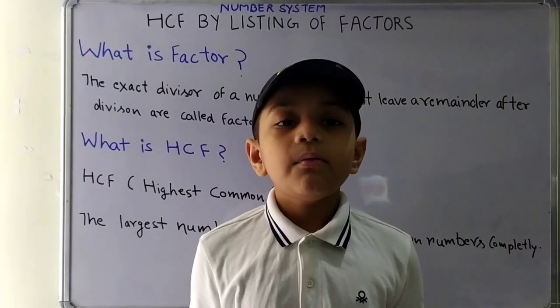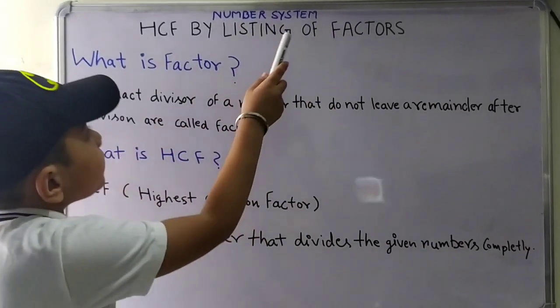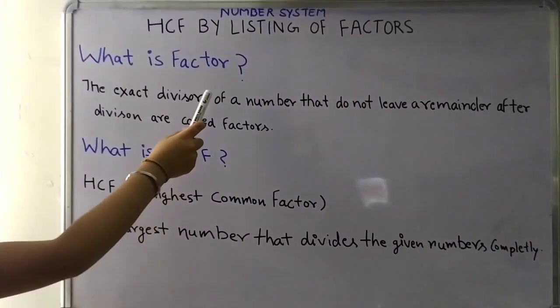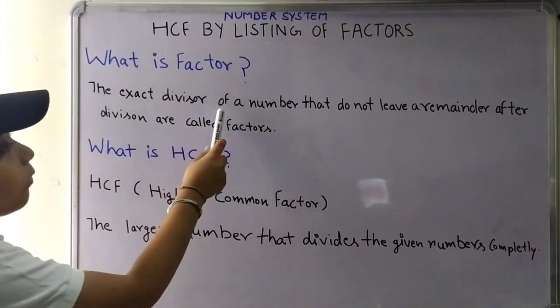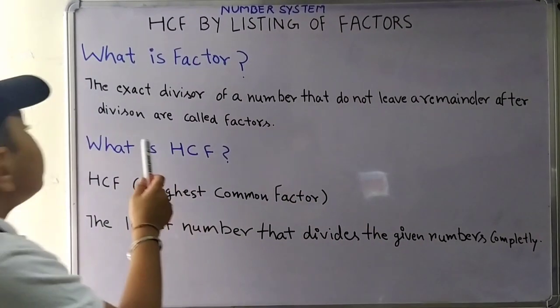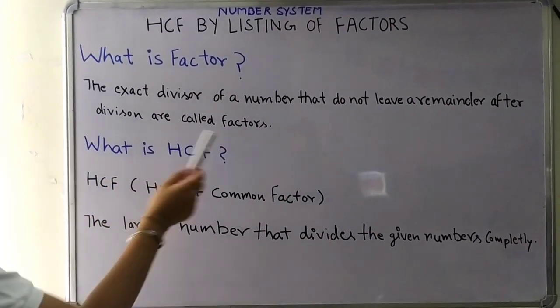Hello everyone. Today I will tell you about number system, HCF by listing of factors. What is factor? The exact divisor of a number that does not leave a remainder after division are called factors.